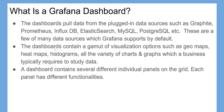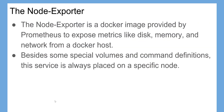The dashboards contain a gamut of visualization options such as geomaps, heat maps, histograms, and all the variety of charts and graphs which a business typically requires to study data. A dashboard contains several different individual panels on the grid, each with different functionalities. The node exporter is a Docker image provided by Prometheus to expose metrics like disk, memory, and network from a Docker host.